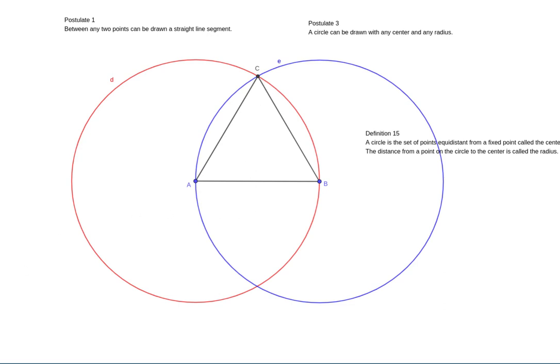Coming back to one of our common notions, common notion number 1 says that things which are equal to the same thing are also equal to one another. So because we have line segment AC equal